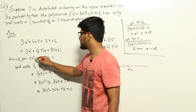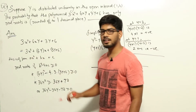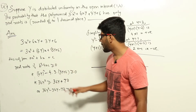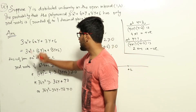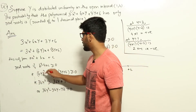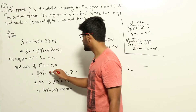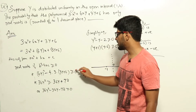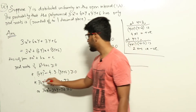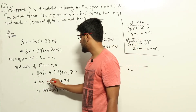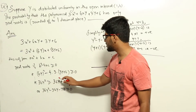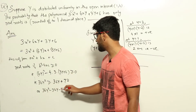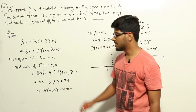A quadratic equation has real roots only if the discriminant b² − 4ac ≥ 0. So this equation will have real roots only if (6y)² − 4·3·(3y + 6) ≥ 0, which gives 36y² − 36y − 72 ≥ 0.